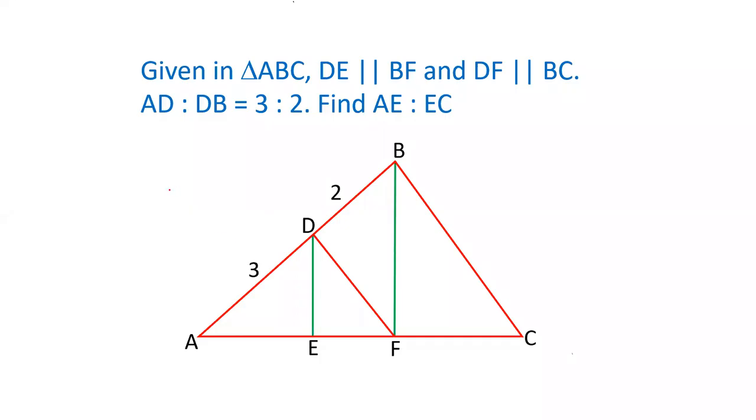Hello friends. Welcome to our YouTube channel SSA Selector. Friends, in this video, there is a question that in a triangle ABC there are two pairs of parallel lines DE and BF. DE is parallel to BF and DF is parallel to BC.